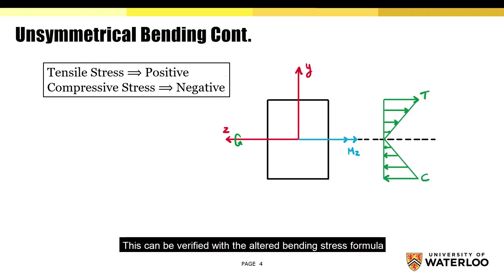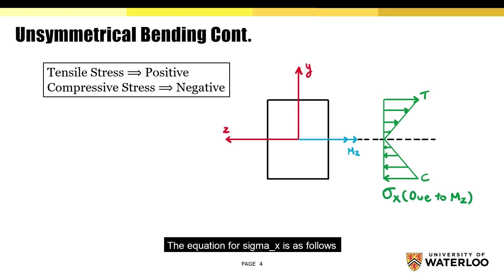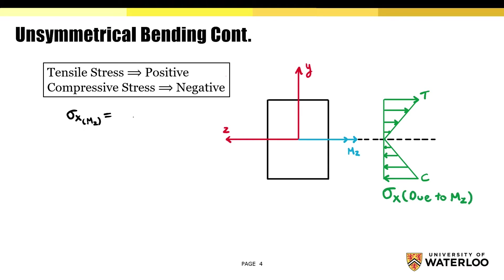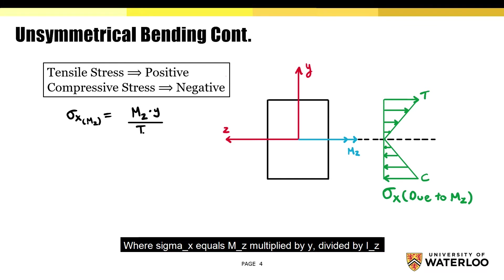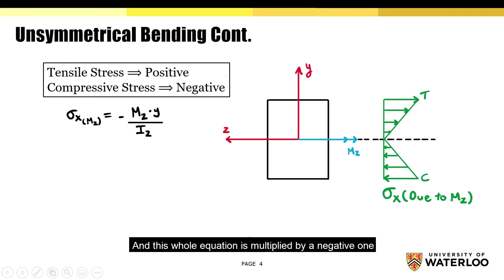This can be verified with the altered bending stress formula. We'll denote the bending stress produced by Mz as sigma x. The equation for sigma x is as follows: sigma x equals Mz multiplied by y divided by Iz, and this whole equation is multiplied by negative 1. I'll go into more detail regarding each variable later in the video.